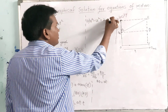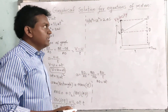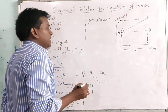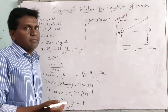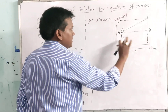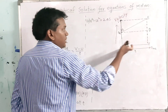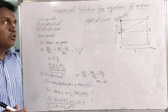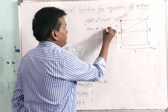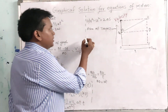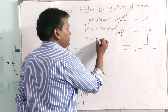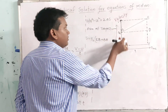Now let us derive the third equation: V² - U² = 2AS. For this, we consider the trapezium OABE. The area of a trapezium is: half × sum of two parallel sides × perpendicular distance. So displacement S = ½ × (OA + EB) × OE.